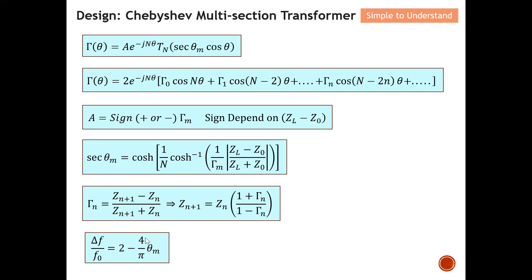The last equation is simply to find the bandwidth. In summary, these are all the formulas required to design a Chebyshev multi-section transformer, which I will use in a worked example in the next video to illustrate the full design process. With that, I'd like to end this discussion. Please remember to like and subscribe — thank you so much for your support, and I hope to see you soon.